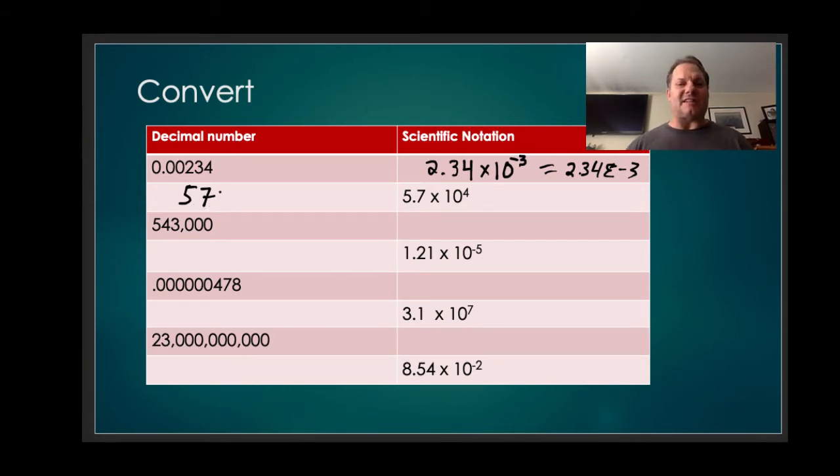So now we've got 57,000. That's 5.7 times 10 to the 4th. I've moved the decimal four times. How did I know it has to be 57,000 and not 0.00057? Again, 10 to the 4th is a large number.